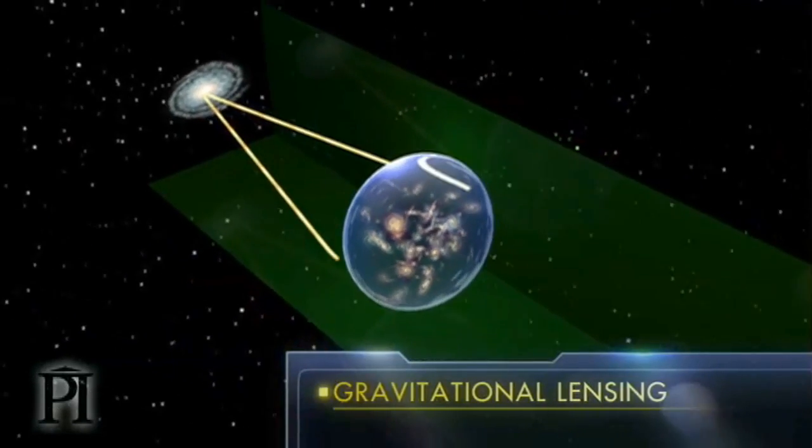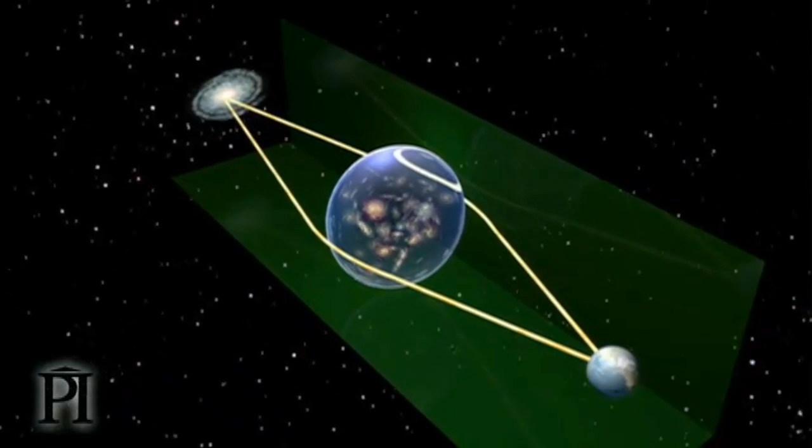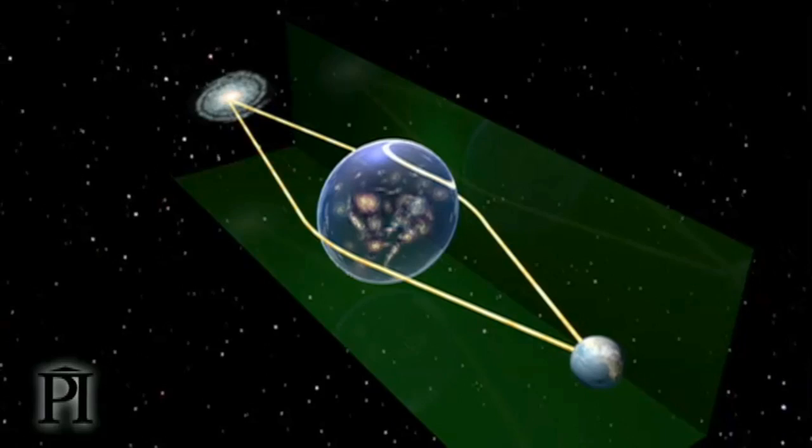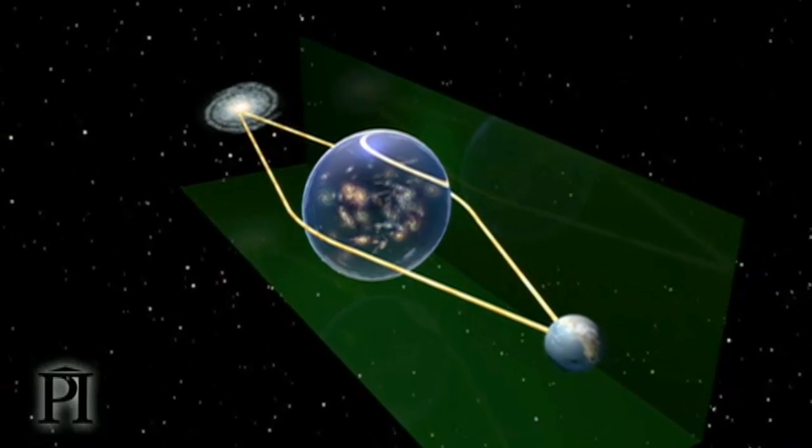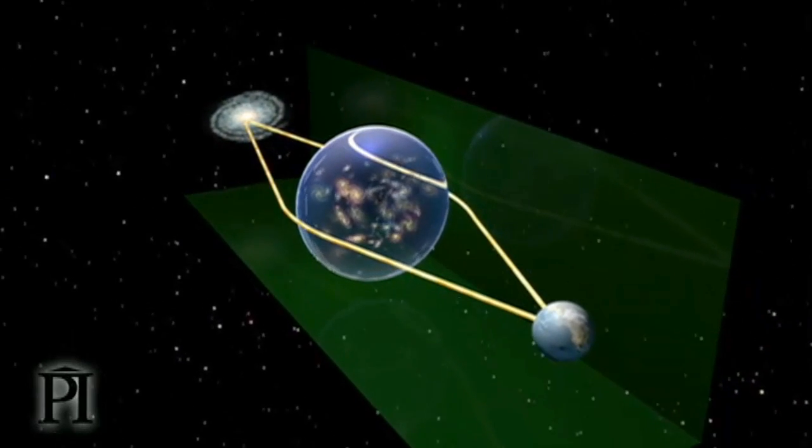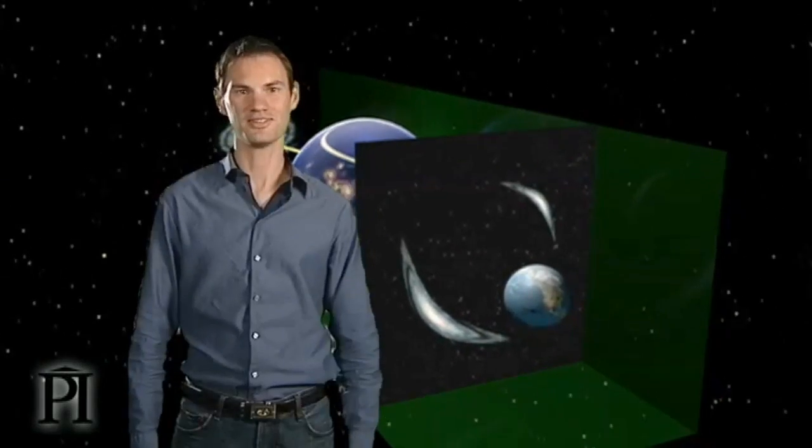The bending affects the light reaching us, distorting the image we see of whatever lies beyond the mass. The good news is that lensing occurs whether we can see the mass or not. That means we can detect dark matter within a cluster of galaxies from the distortion it creates in the images we see of more distant galaxies.